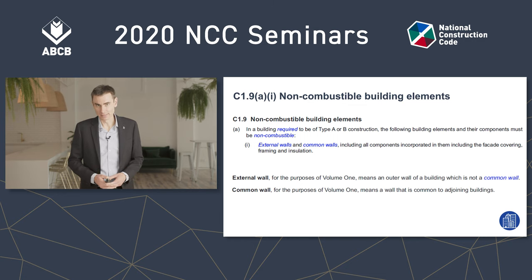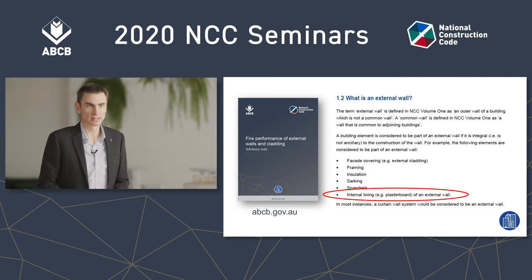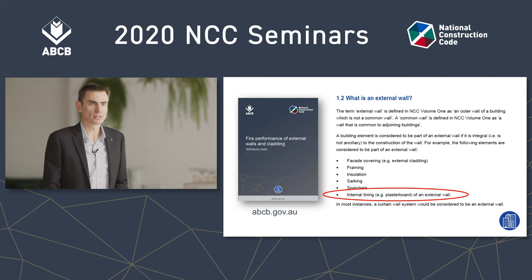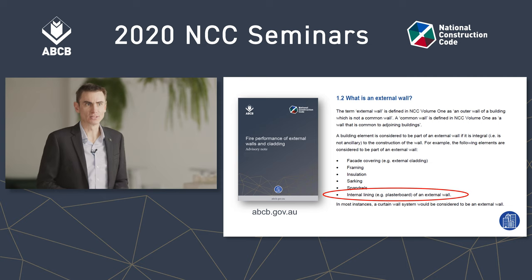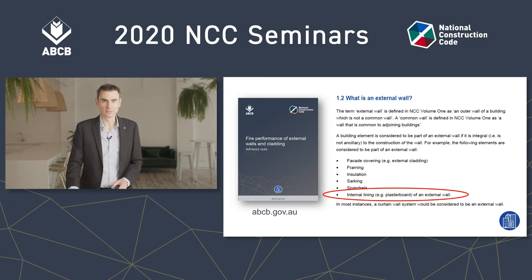Well, we say yes. If you want that in writing, here it is: the fire performance of external walls and cladding advisory note. Part 1.2 of that document talks about what an external wall is, and specifically points out that the internal lining of an external wall is considered a part of that wall. This advisory note is available from our website, abcb.gov.au.